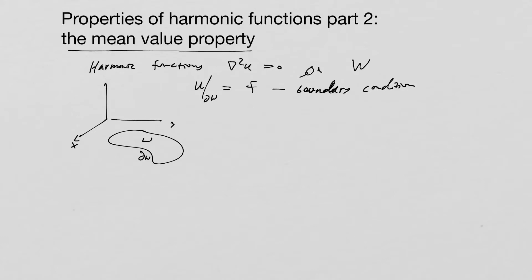In the last video, we talked about how harmonic functions have zero net flux. The first property we covered was existence and uniqueness, and zero net flux was number two. In this video, we're going to talk about the mean value property. That's number three, this is the part two video.